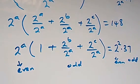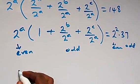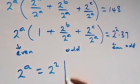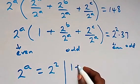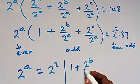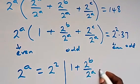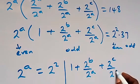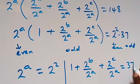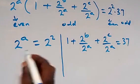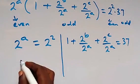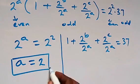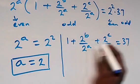We equate this. From here we have 2 raised to power a now equals to 2 raised to power 2, and here we have 1 plus 2 raised to power b over 2 raised to power a plus 2 raised to power c over 2 raised to power a now equals to 37. That is, on this side we have the same base, then a here is equals to 2.